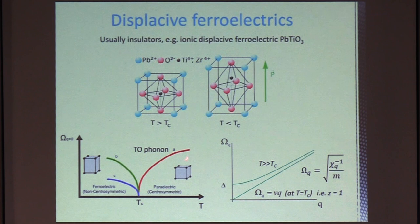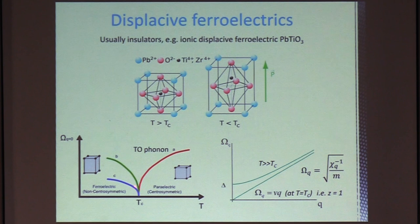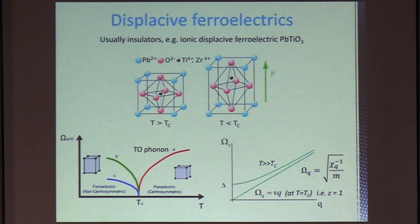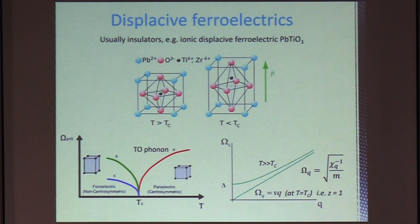where a positive ion displaces in the unit cell. Inversion symmetry is broken below TC. And it's driven by a soft transverse optical phonon mode, as you can see here. So as you cool down, the frequency of this ion oscillating in the unit cell drops to zero at TC.